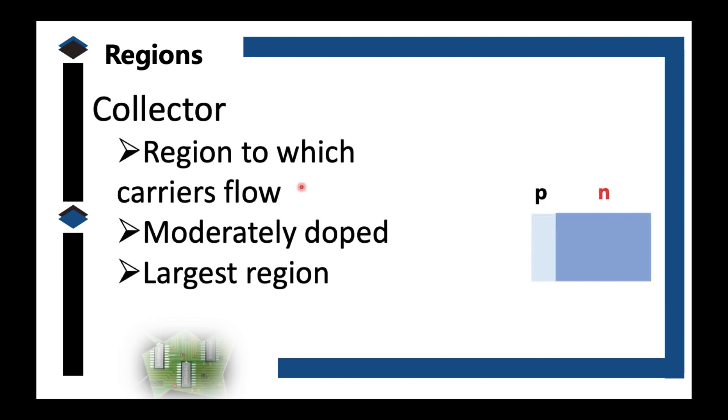The collector, again as depicted in the picture, it is the largest. So with regards to its color gradient, it's less dark than the emitter but darker than the base because it is moderately doped. It's the largest region because from the name itself, it's the collector of what the base and emitter throw.